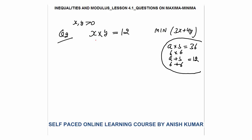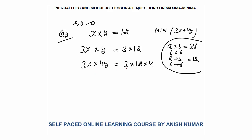If I take the sum straight away I get x + y, but I need 3x + 4y. So I will multiply by 3: that gives 3 × 12 on the right. The sum becomes 3x + y. But we also need four y, so multiply by four as well: 3x × 4y = 3 × 12 × 4 = 144.